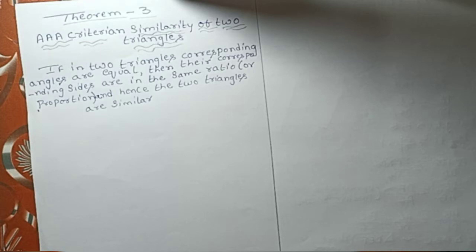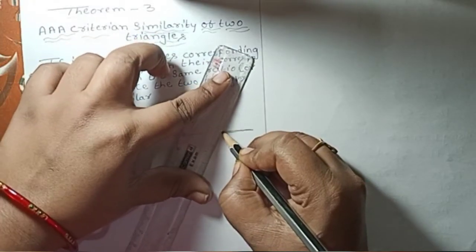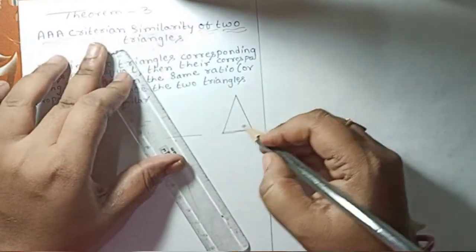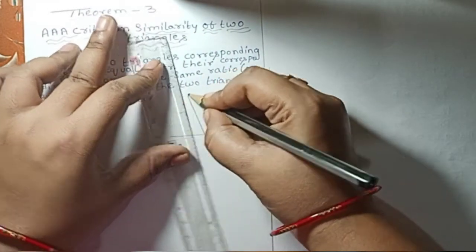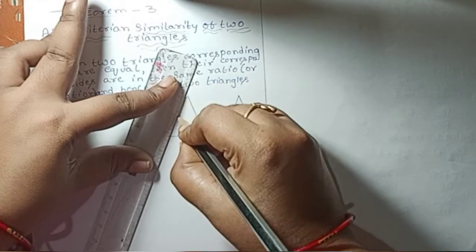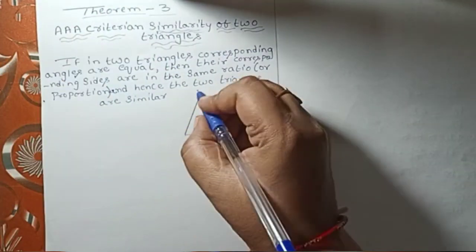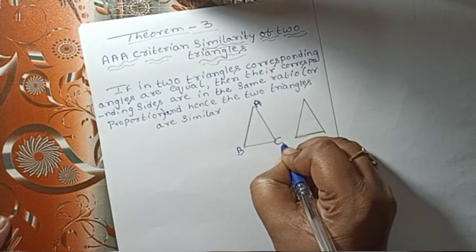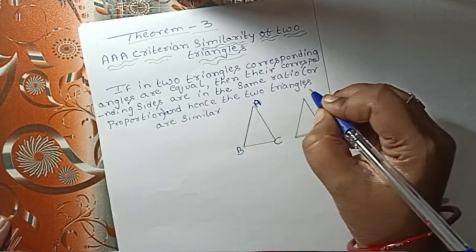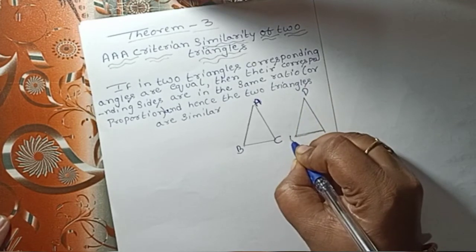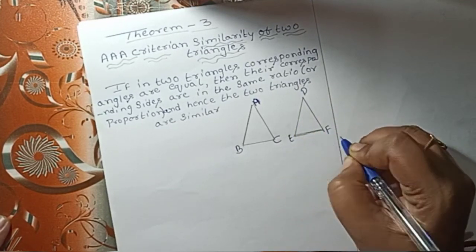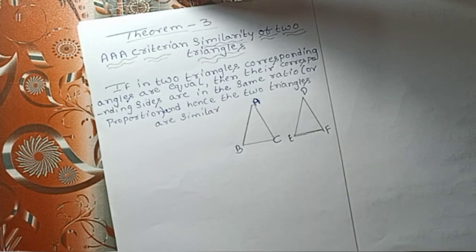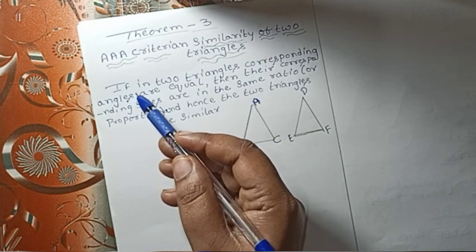Let's draw a triangle in the first place. We have triangle ABC and triangle DEF. These are the two triangles we will be working with for this theorem.